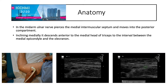This is also the anatomical picture of this position. In the mid arm, the ulnar nerve pierces the medial intermuscular septum and moves into the posterior compartment, inclining medially. It descends anterior to the medial head of triceps to the interval between the medial epicondyle and the olecranon. You can see the ulnar nerve here, the triceps muscle, with its superficial and deep parts also shown.